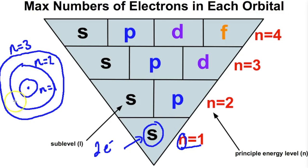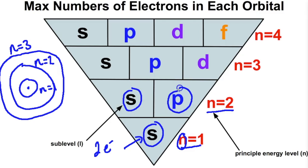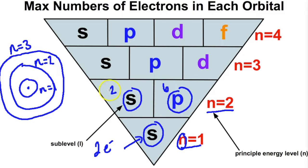If we jump out to the second energy level, we see it contains two sublevels: an s orbital and the p orbitals. The s orbital can hold two electrons and the p orbitals — all three of them — can hold a maximum of six. Adding those together gives us eight, so the second energy level can hold eight electrons maximum.